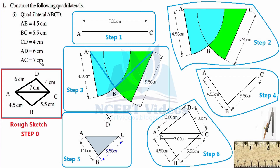Let's construct the rough sketch. We can start with any line segment — not necessarily the diagonal — but we chose to draw diagonal AC first at 7 cm. We used a ruler just as a straight edge; these are not actual measurements, just a rough sketch. We name the endpoints A and C. Since we are going anticlockwise, B will be on one side and D on the other. AB is given as 4.5 cm.